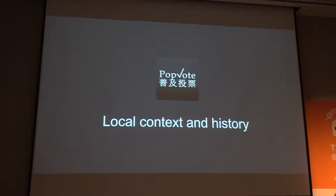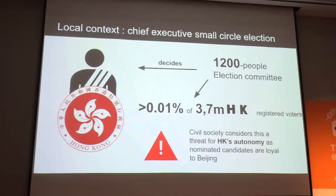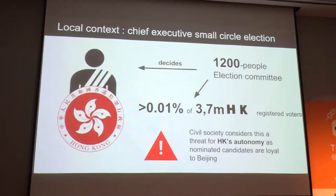A little bit of local context and history for PopeVote. The chief executive election is not very democratic, to say the least. Only a committee of 1,200 people get to nominate and elect the chief executive of Hong Kong — less than 0.01% of the registered voters, who are 3.7 million in Hong Kong. It's considered a threat by civil society, as most nominees are usually loyal to Beijing and could threaten Hong Kong's current autonomy system.